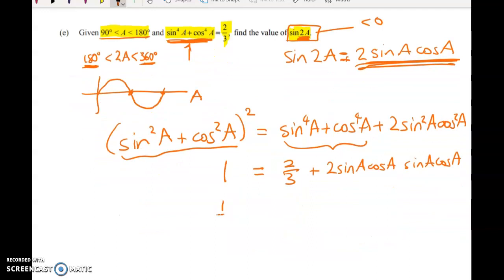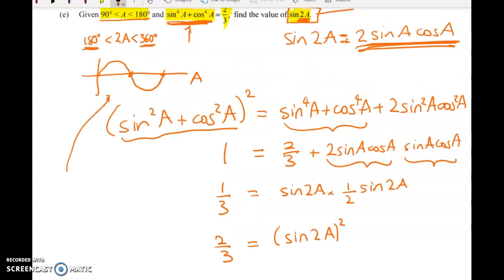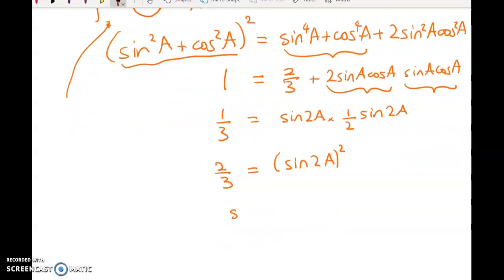So what have I got now? 1/3, I think. So 1/3 is equal to sin a cos a times half of sin(2a). So that gives me 2/3 is equal to sin(2a)². And this is where my earlier work comes in that we know we must have a negative number because that tells me that sin(2a) must equal negative root 2/3, since 2a is between 360 degrees and 180 degrees.